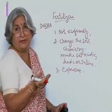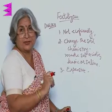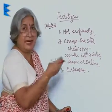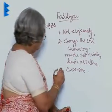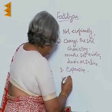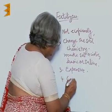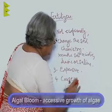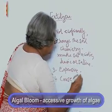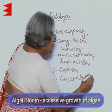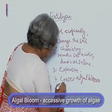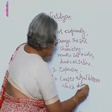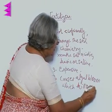Manure is something a farmer can make out of waste only — he doesn't have to buy anything. But with fertilizers, he has to buy them. Fertilizers also cause algal bloom, which means excessive growth of algae that kills aquatic organisms.